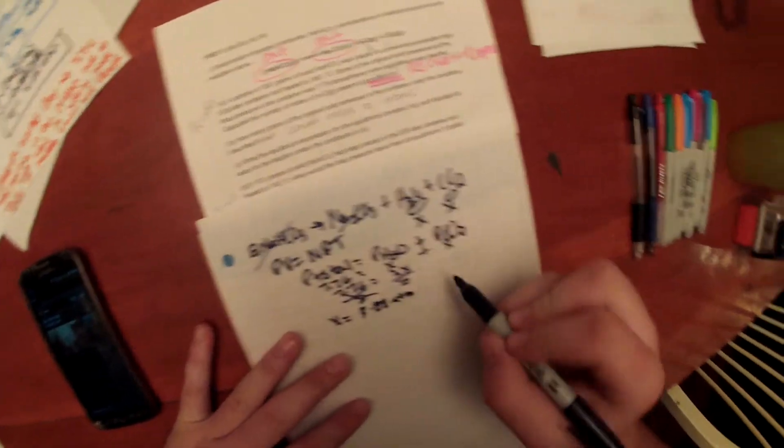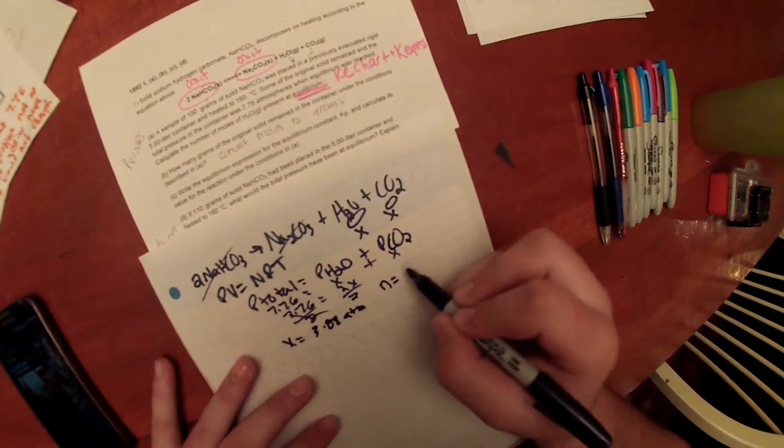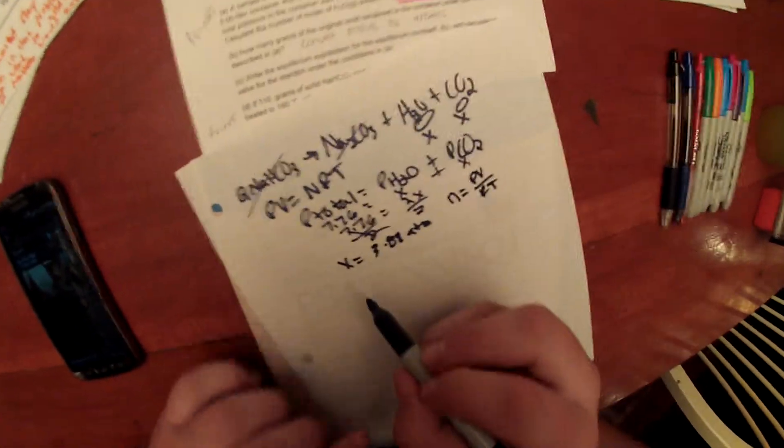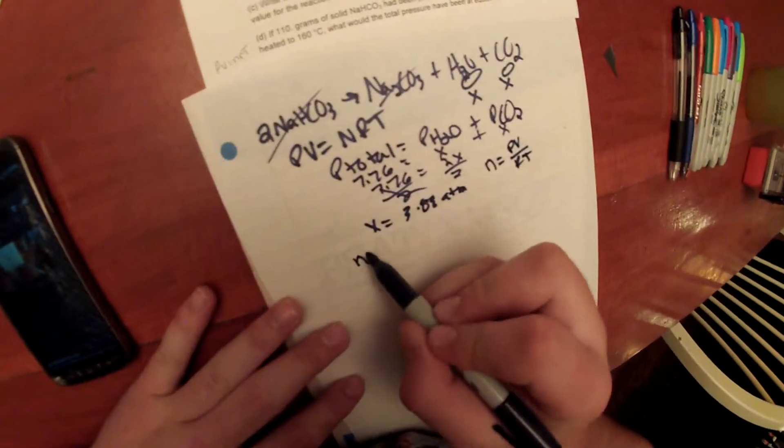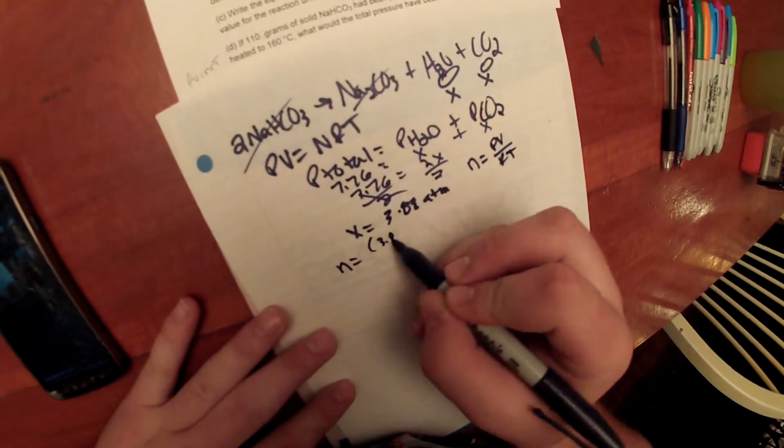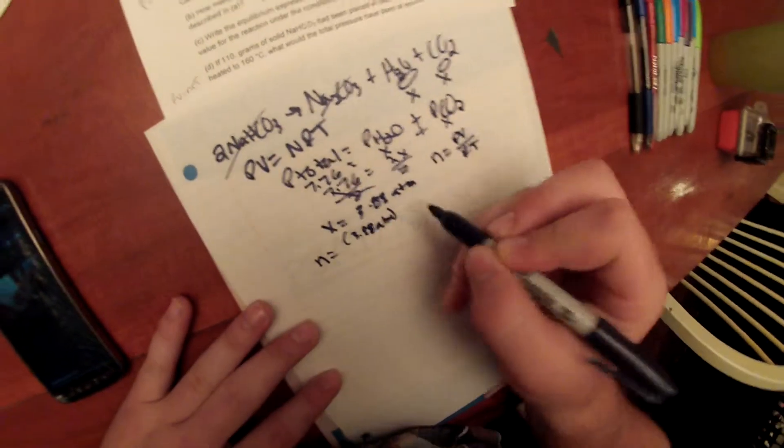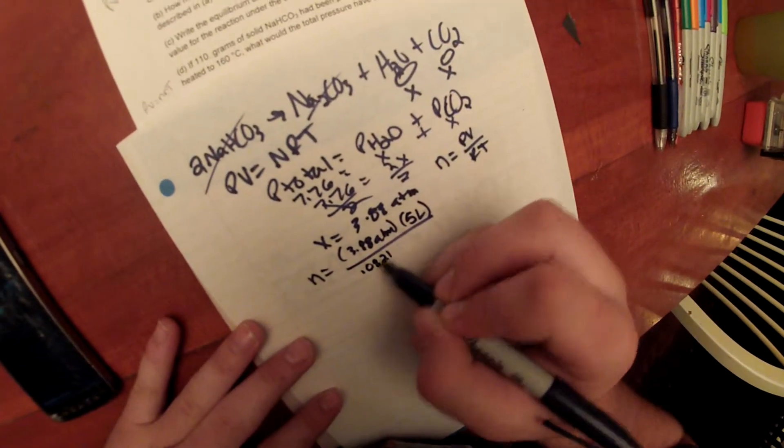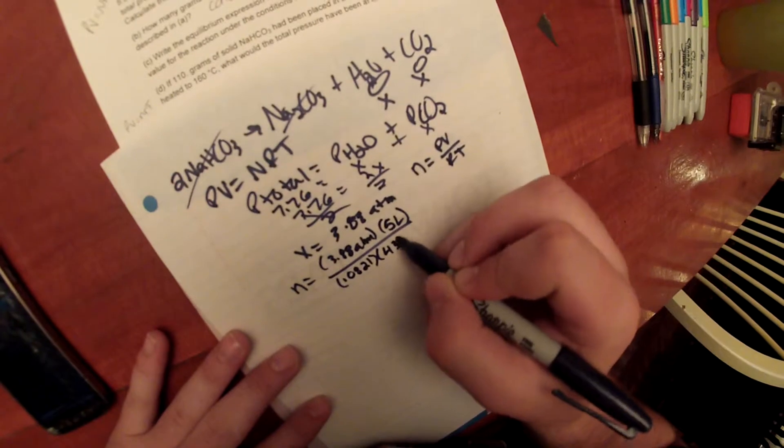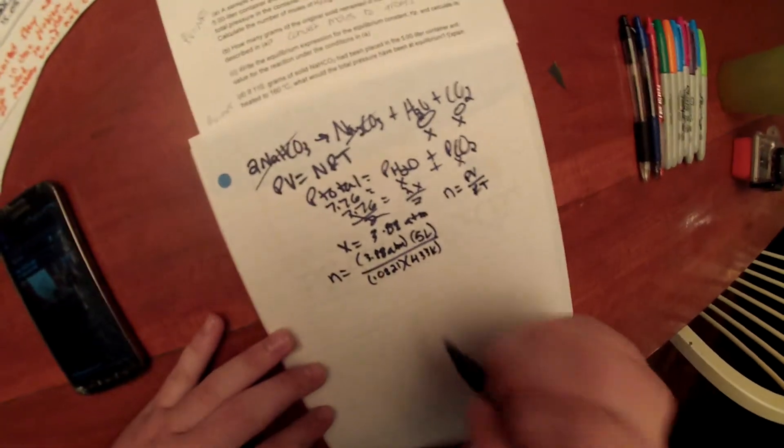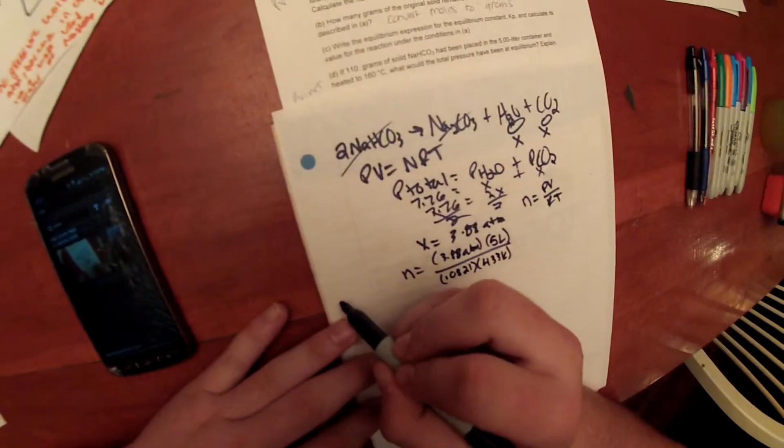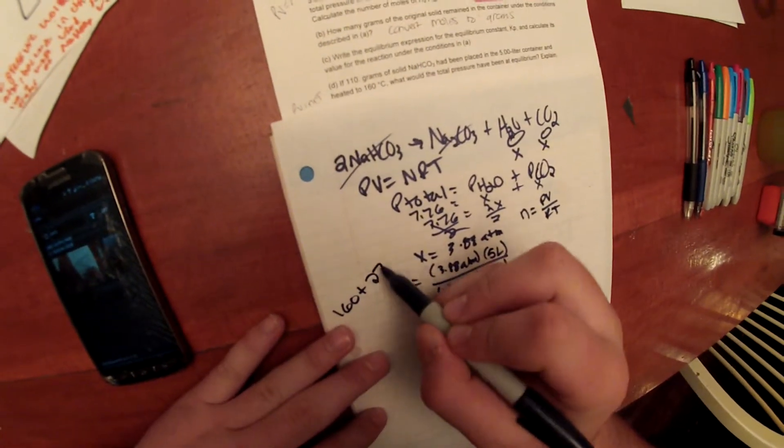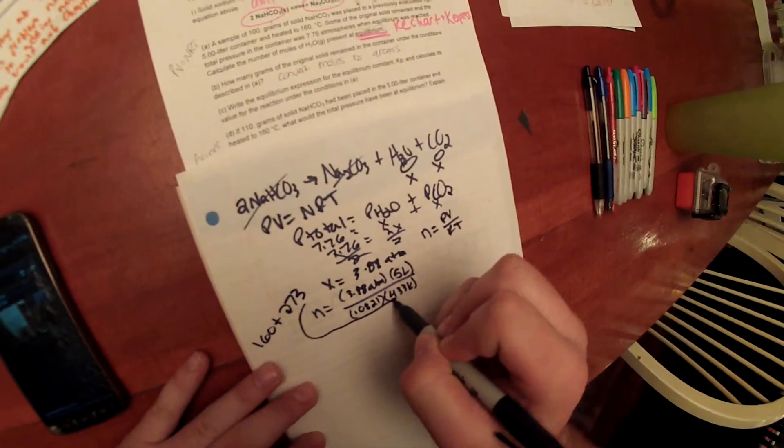And this is the pressure we'll use in our ideal gas law, which will be N equals PV over RT. So now to solve, we will get N equals 3.88 ATMs times 5 liters all over constant of 0.0821 times 433 Kelvin, which we found by converting Celsius to Kelvin, which is done by adding 273 to whatever the Celsius value is, which would be 160 plus 273, and that gives us 433.